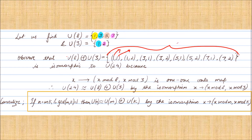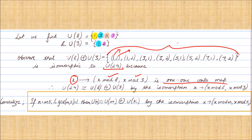This indicates an isomorphism between U8 × U3 and U24, since U24 also has exactly 8 elements. Not just equal numbers of elements are required — there must be a one-to-one onto map. Here the map is: x ∈ U24 maps to the tuple (x mod 8, x mod 3), giving the remainders when x is divided by 8 and 3 respectively. This map is indeed one-to-one and onto, so U24 is isomorphic to U8 × U3.